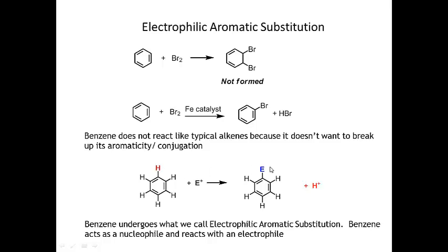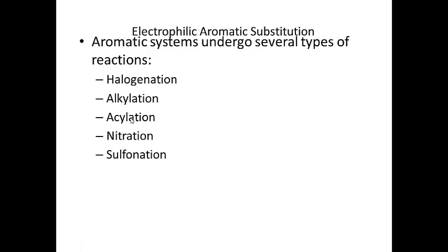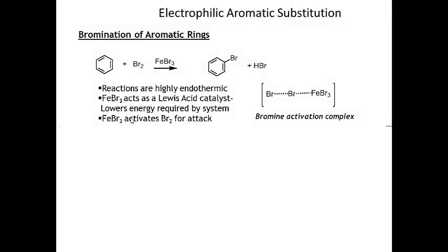Under electrophilic aromatic substitution conditions, benzene will be my nucleophile and whatever I add to the benzene ring is going to be my electrophile. There are several reactions we're going to look at: halogenation, alkylation, and acylation for now, and then we'll do another video later in the week with nitration and sulfonation. So let's look at halogenation of aromatic rings.